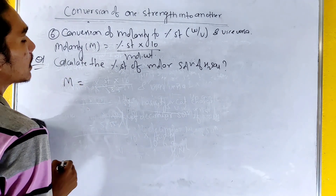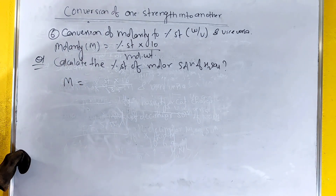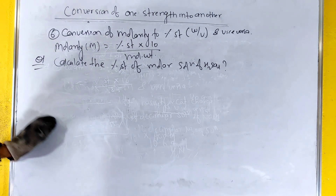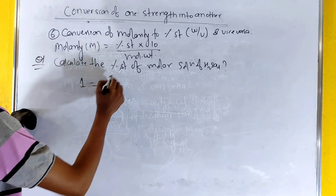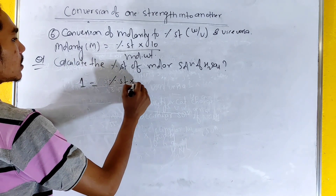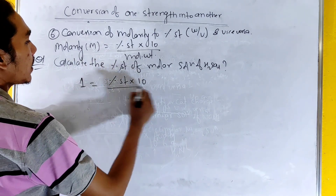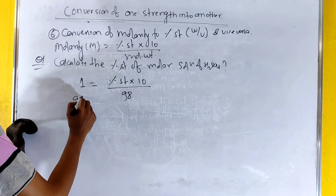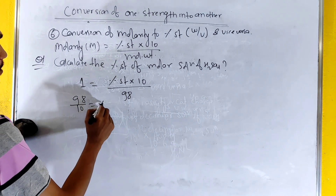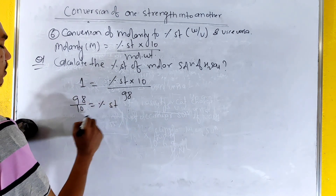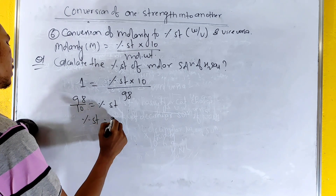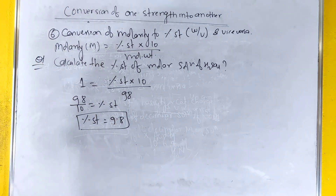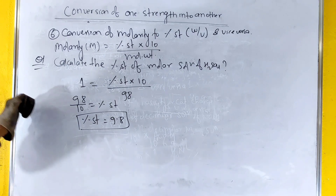For a 1M solution: 1 equals percentage strength into 10 divided by molecular weight 98. So percentage strength equals 98 divided by 10, which is 9.8 percent.